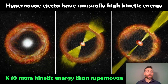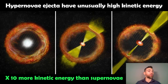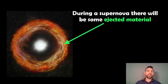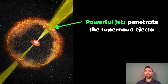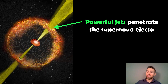A hypernova is typically quite unusual because it has very high kinetic energy, which a supernova typically wouldn't have — they can have ten times more kinetic energy than a supernova. On the left hand side here, you might have a typical supernova where the outer layers of the star are blown away and you get this expanding shell of ejected material. But with a hypernova you actually get additional powerful jets at the poles along the rotation axis, and they will penetrate that supernova ejecta. These powerful jets are what really stand out from a hypernova compared to a supernova.